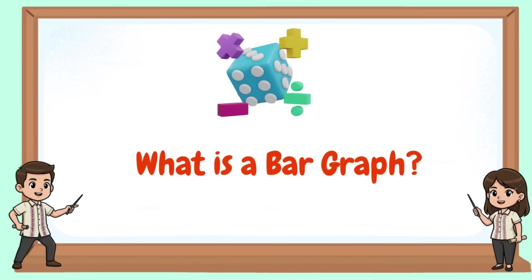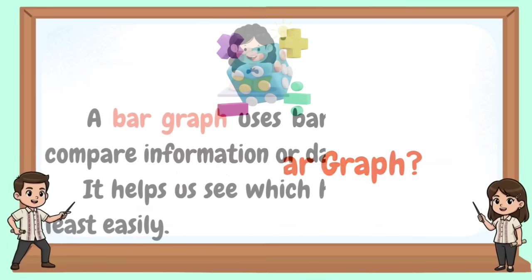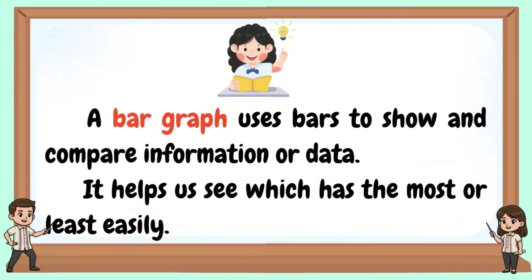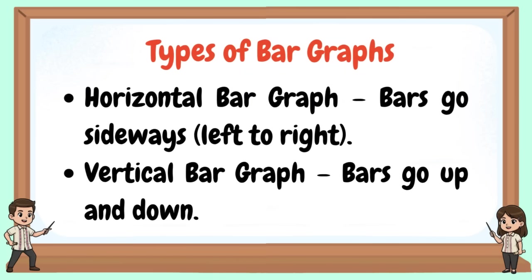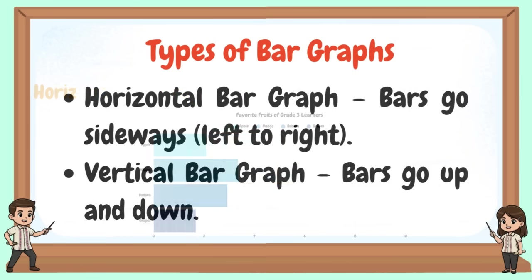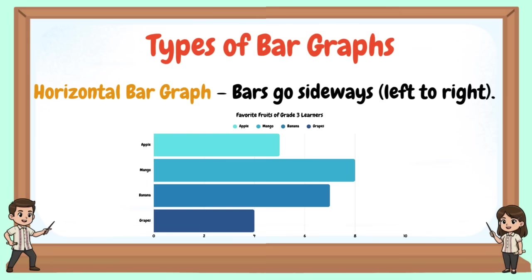A bar graph uses bars to show and compare information or data. It helps us see which has the most or least easily. Types of bar graphs: horizontal bar graphs — bars go sideways; vertical bar graphs — bars go up and down.